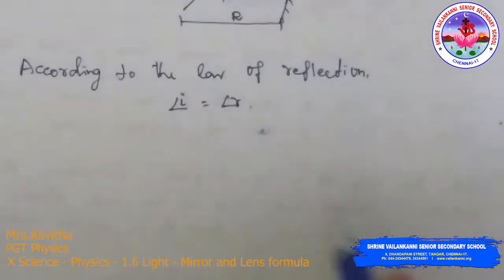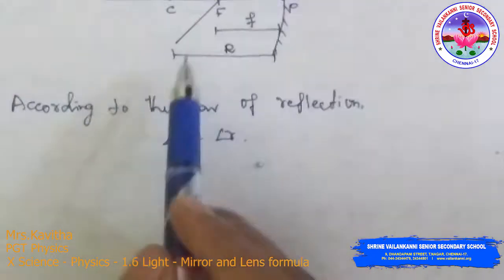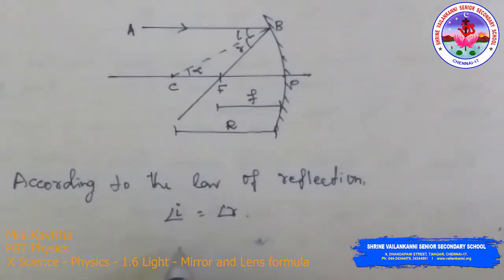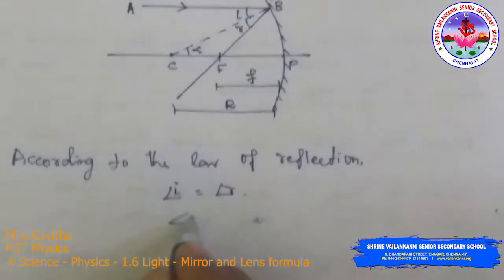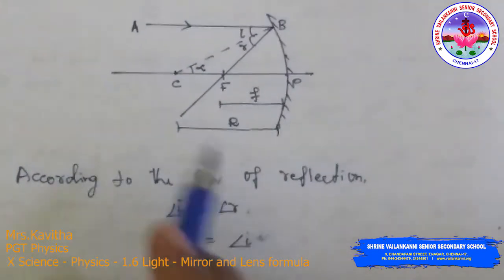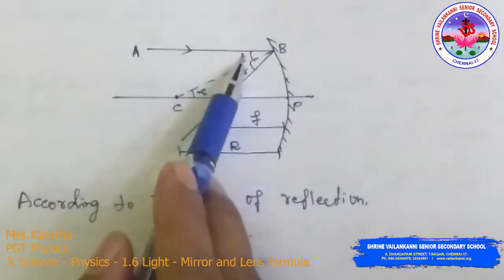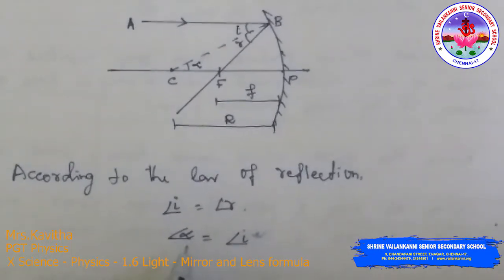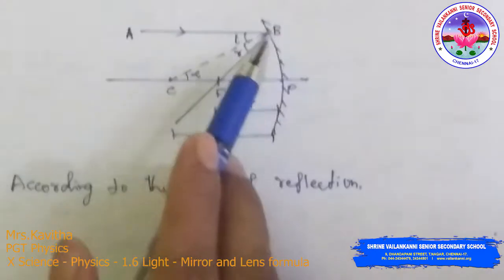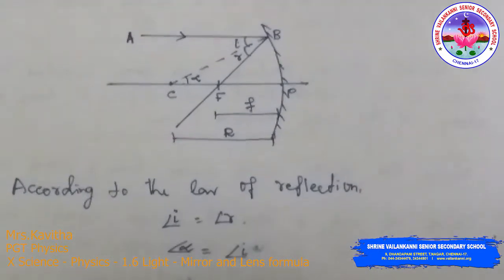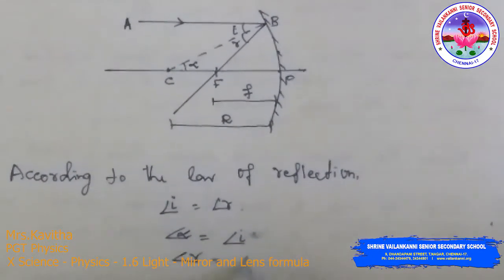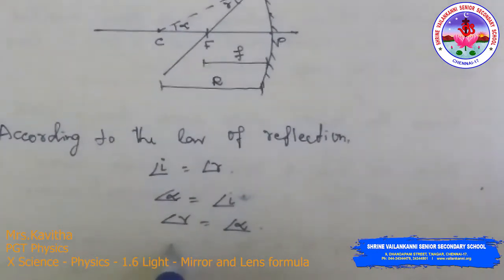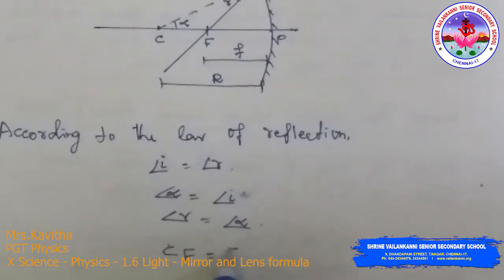Now according to the law of reflection, the angle of incidence equals the angle of reflection. As AB is parallel to PC, we can take angle alpha equal to angle of incidence. In triangle BFC, angle of reflection equals angle alpha, and by this we can prove that CF equals FB.